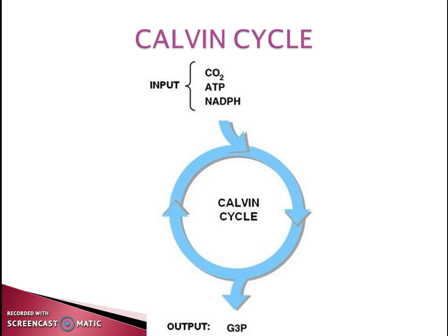It is also known as the reductive pentose phosphate cycle or photosynthetic carbon reduction cycle, because this pathway decreases the oxidation state of carbon dioxide. Carbon dioxide has an oxidation state of +4, and this state is decreased to levels found in sugars — that is +2 in keto groups and 0 in secondary alcohols. That is why the Calvin cycle is also known as the photosynthetic carbon reduction cycle.